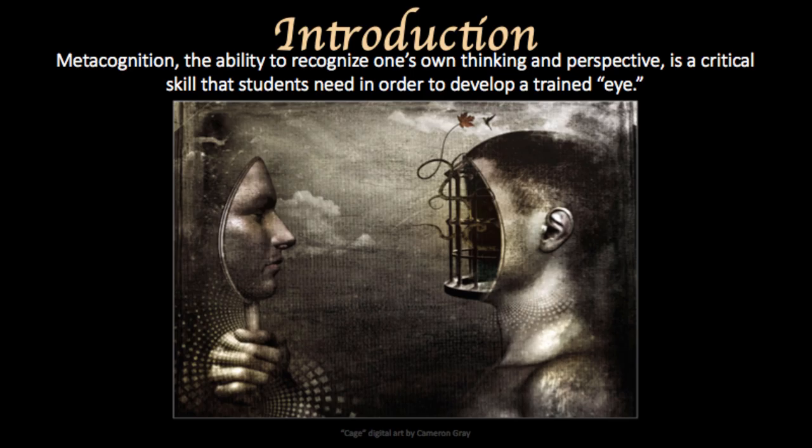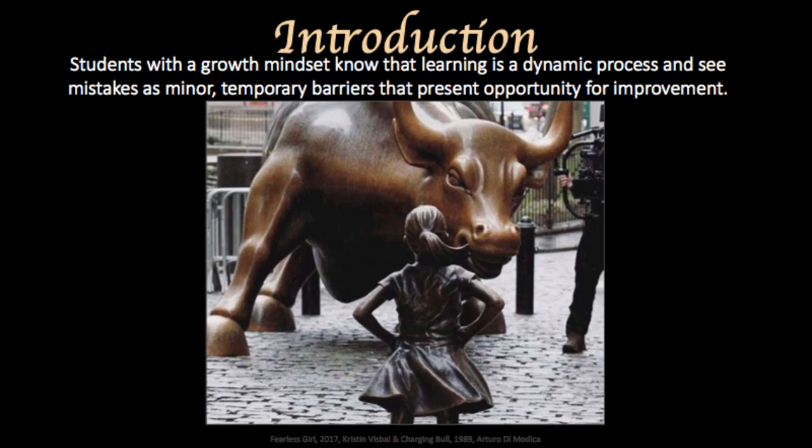The most difficult thing to critique is ourselves. Humans have a bias that makes them falsely believe that everyone shares the same values that they do. Metacognition, which is the ability to recognize one's own thinking and perspective, is a critical skill that students need in order to develop a trained eye. Students must be able to accurately self-evaluate and look closely and objectively at how their perspective of themselves, as well as their perspective of everything around them, influences their learning.